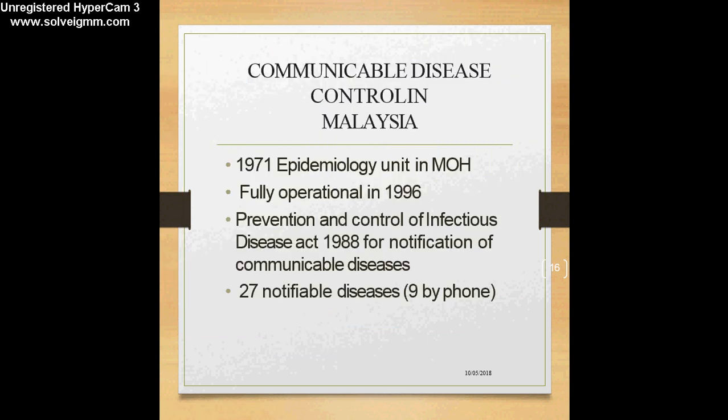Let's look at a bit of history of communicable disease control in Malaysia. For the first time in 1971, the epidemiology unit was established in the Ministry of Health, which was fully operational only in 1996. This was followed by the Prevention and Control of Infectious Diseases Act 1988 for notification of communicable diseases.